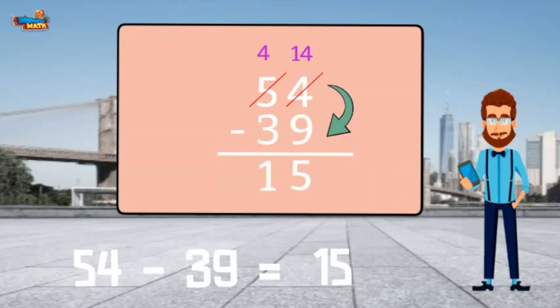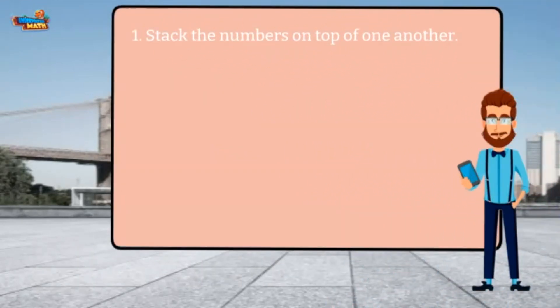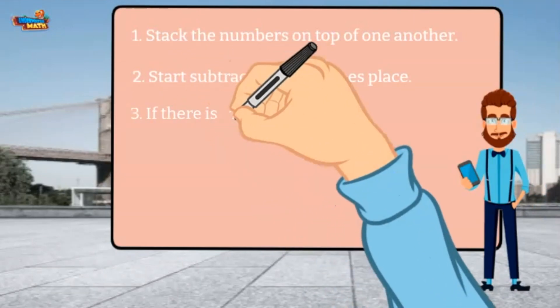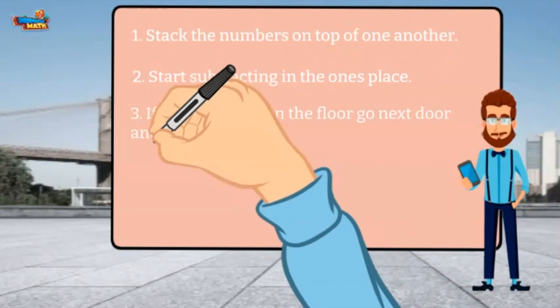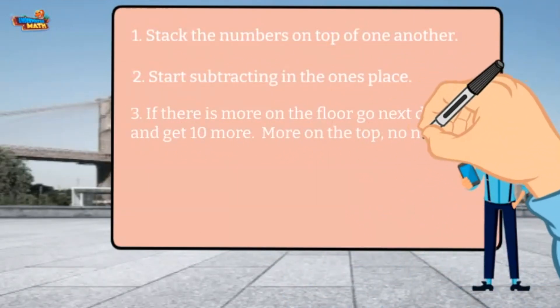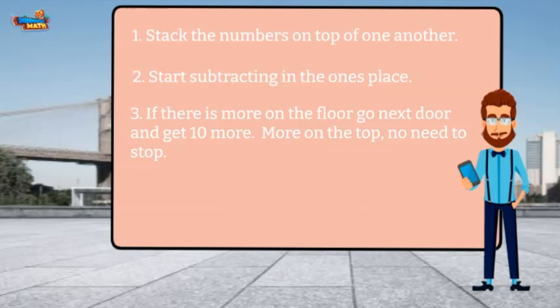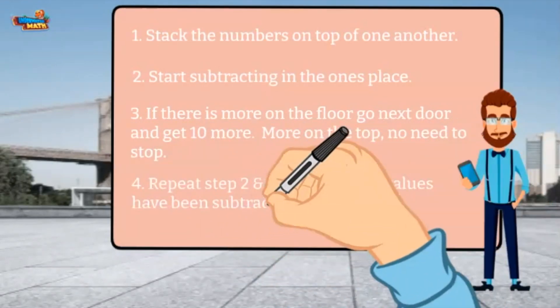The steps for subtracting are stacking the numbers on top of one another. Start subtracting in the 1's place. If there is more on the floor, go next door and get 10 more. More on the top, no need to stop. Repeat the steps until all the place values have been subtracted.